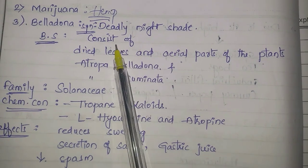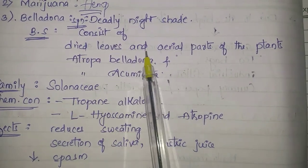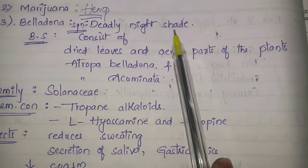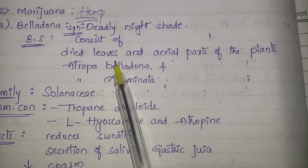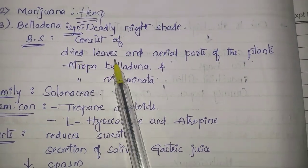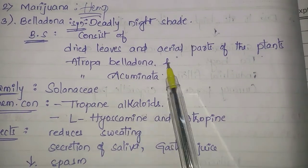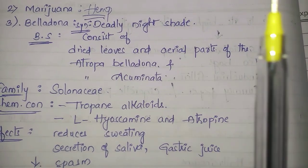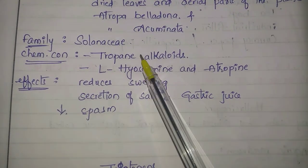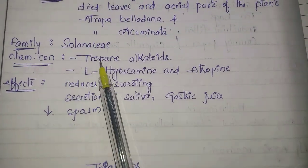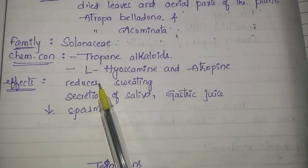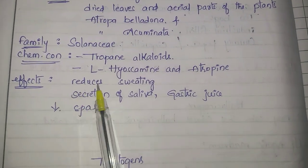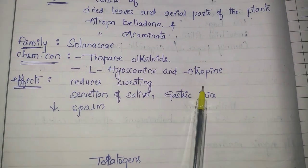The synonym for belladonna is deadly nightshade. Biological source: it consists of dried leaves and aerial parts of the plants Atropa belladonna and Atropa acuminata, belonging to the family Solanaceae. Chemical constituents: belladonna contains tropane alkaloids, and the major constituent is l-hyoscyamine and atropine.